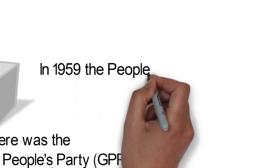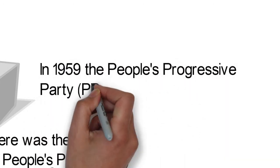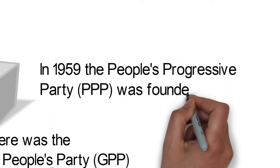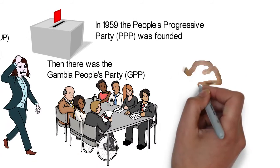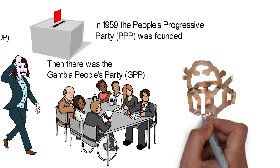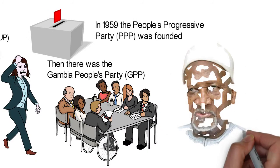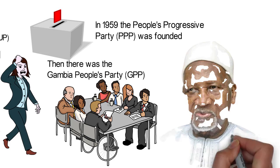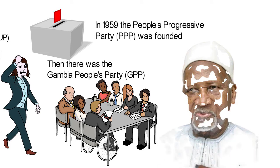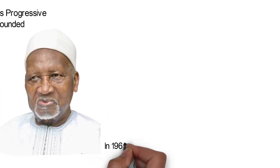In 1959, the People's Progressive Party was founded. The party was formerly known as the Protectorist People's Party. The party was headed by a former Veterinary Officer, Daouda Jawara.